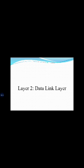The second layer is the Data Link Layer. The Data Link Layer synchronizes the information which is to be transmitted over the Physical Layer. The main function of this layer is to make sure data transfer is error-free from one node to another node over the Physical Layer. Transmitting and receiving data frames sequentially is managed by this layer.